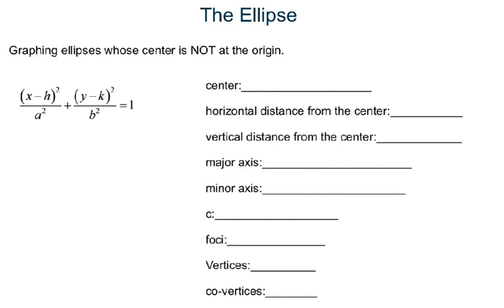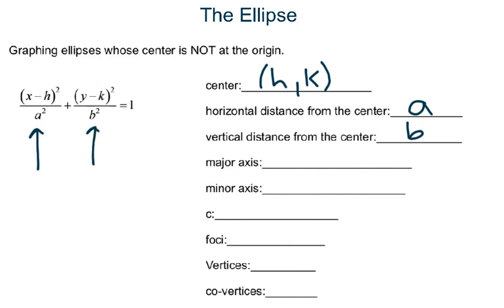So the center, just like when we did the vertex of the parabola and the center of the circle, is going to be (h, k). So the center is going to be (h, k). Now here we have a underneath the x again. That means your horizontal distance from the center — not the origin but from the center — is going to be a, going left and right. The vertical distance from the center is going to be b because it's underneath the y, which goes up and down.